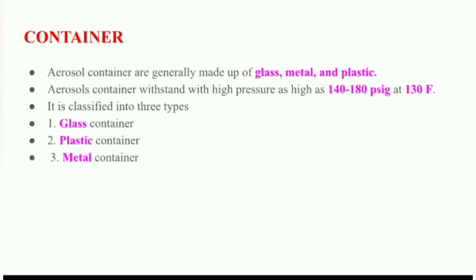Now we will discuss some of the containers used in the production of aerosol. Aerosol containers are mainly made up of glass, plastic, or metal. One of the most important criteria is that the container must be able to withstand high pressure, that is 140 to 180 psig at 130 degrees Fahrenheit. Only then can a container be selected for the production of an aerosol, otherwise it is not selected.